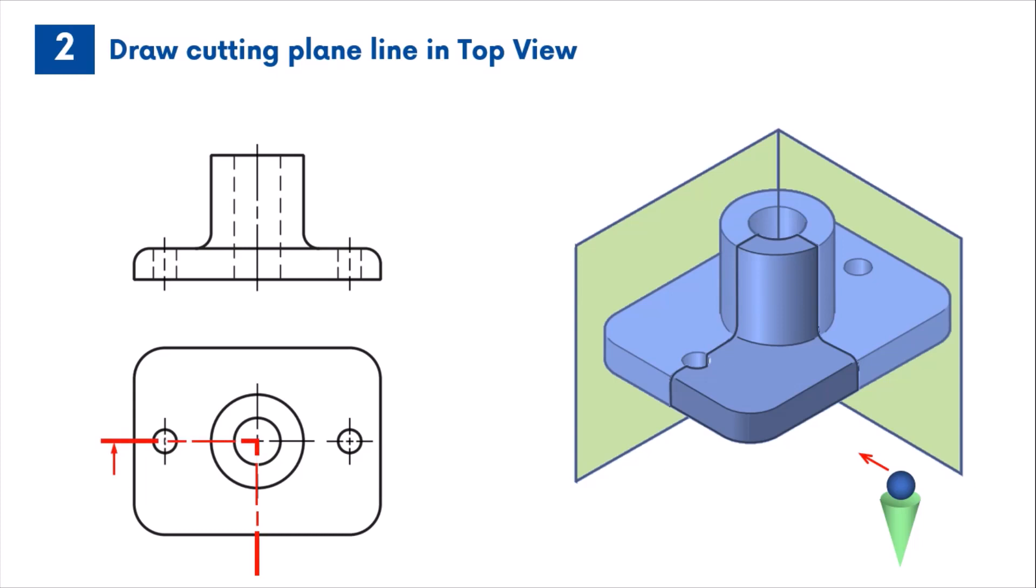In a half-section, the cutting plane passes only halfway through the part and removes one quarter of the object. Usually, one arrow is used to indicate the direction of the section view. In this case, the arrow is pointing towards the front, and therefore the section will appear in the front view.